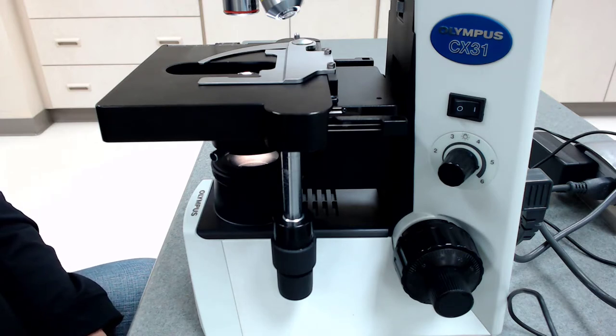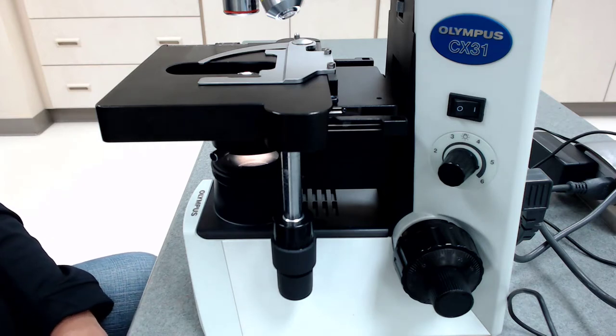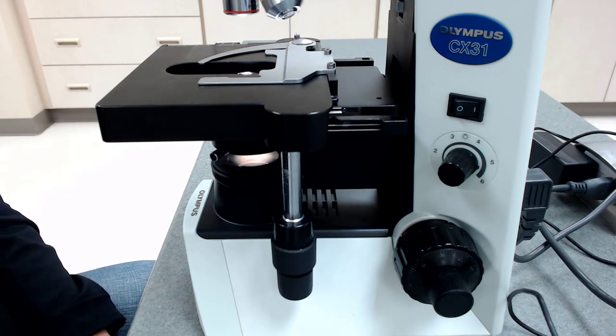So a binocular parfocal compound light microscope. So traditionally, simple microscopes or early microscopes had a single lens or even a glass ball that they would use. So like Anthony van Leeuwenhoek would have used a glass ball as his lens system, but he could see things that were somewhere in the neighborhood of 270x magnification. Pretty awesome for the 1600s.